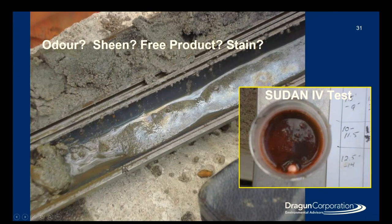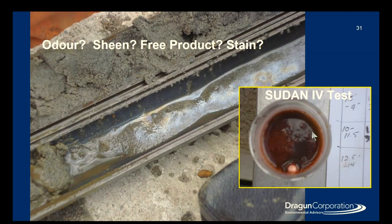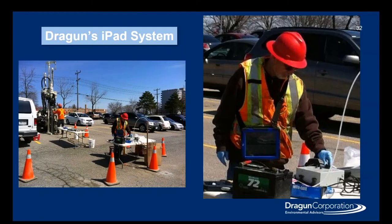Lastly, we look at sheen or free products and use our olfactory senses for the overall strength of the chemical impact. In this example, we have a pretty heavy sheen on the surface from the soil sample. Sometimes when we're looking for free product, we'll use a Sudan-4 test, which has an activator. You mix a certain amount of soil and water together, and if it turns red, it indicates a high value of total petroleum hydrocarbons in the soil, which is indicative of free products.